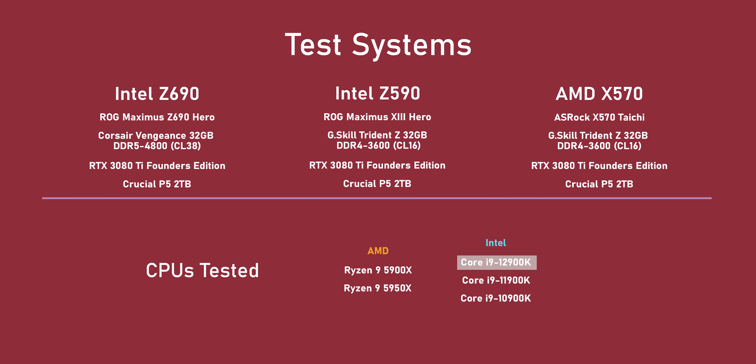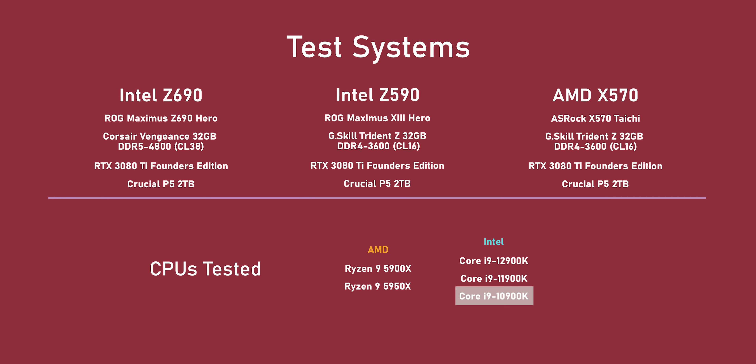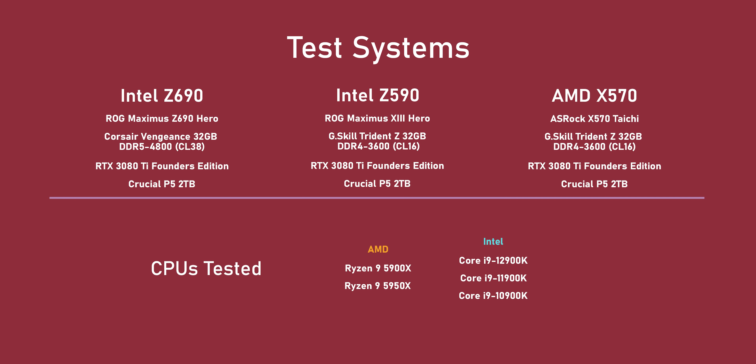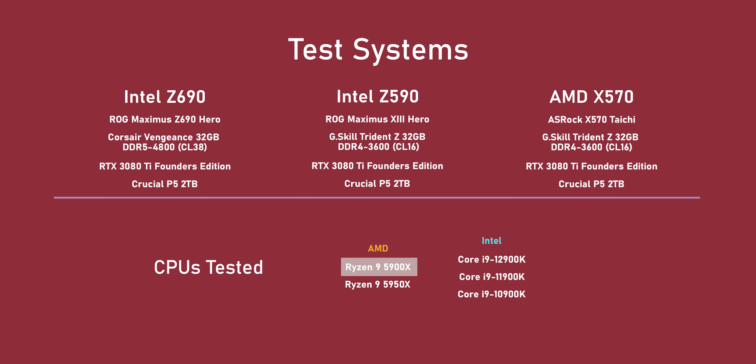Stay tuned for that. All in all, we're testing the Intel 12900K, 11900K, the 10900K, and for AMD we're testing the 5950X and the 5900X. And just so you know it's fair, multi-core enhancements have been disabled for all tests — that includes PBO for AMD and the general MCE for Intel. Multi-core enhancements is a great free performance tool, but it really messes with power consumption.